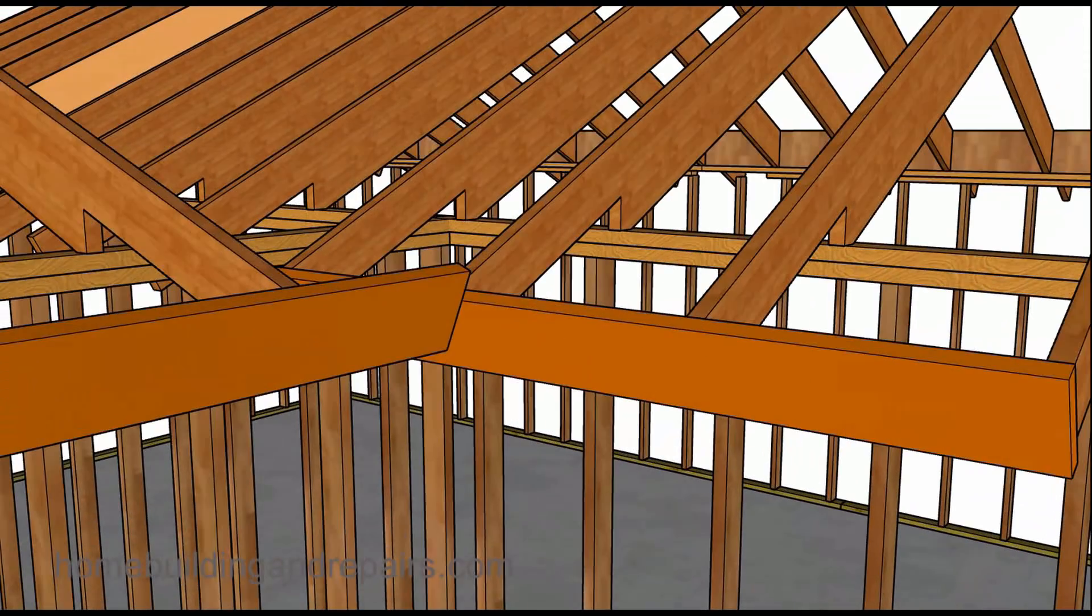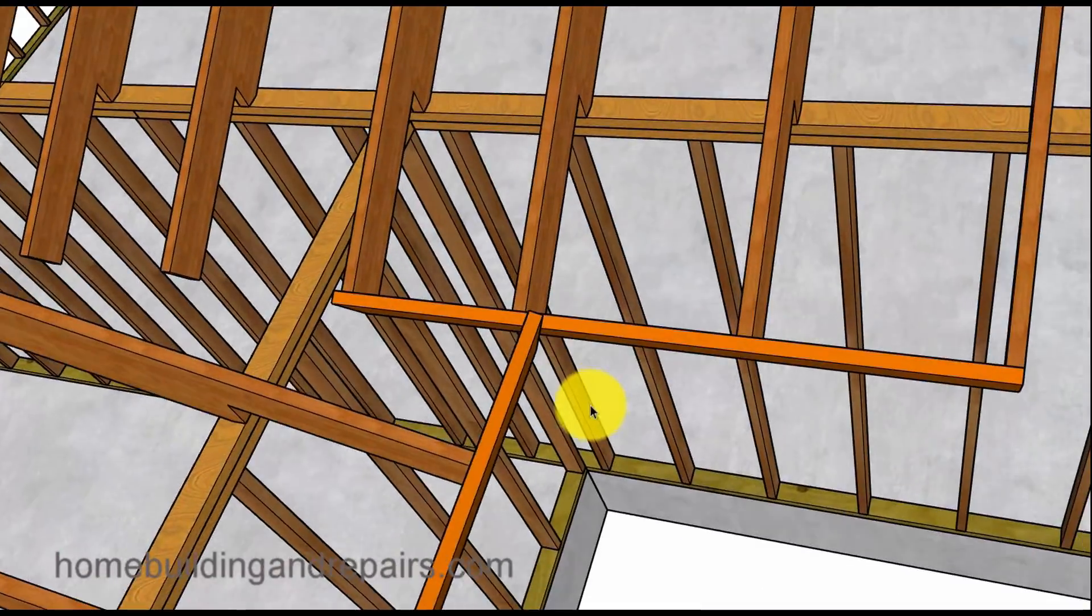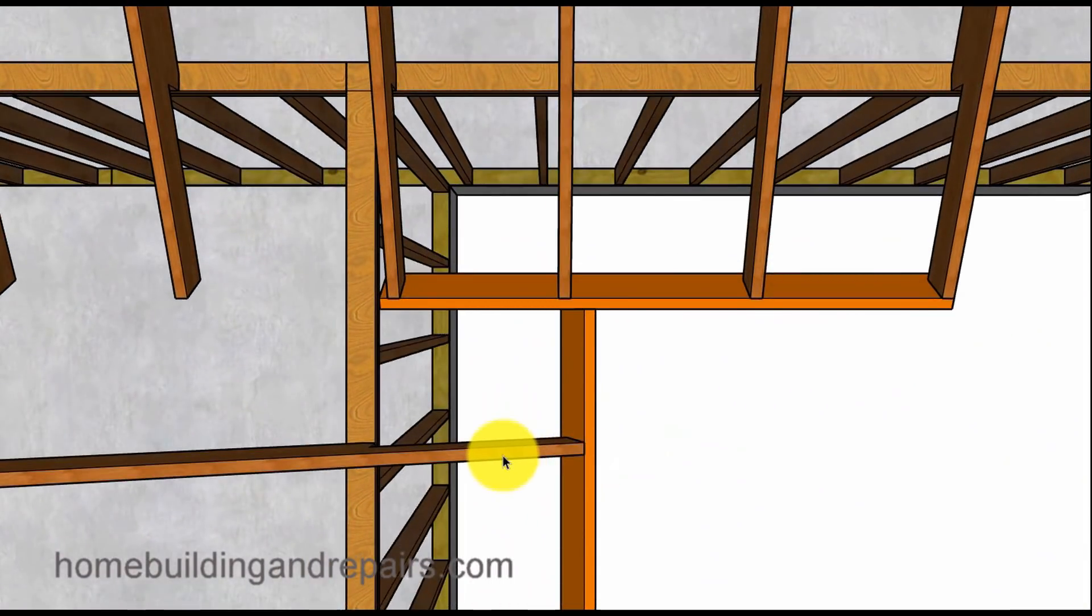Now one more thing I'd like to point out is that the fascia board if you change the pitches. Let's just say that you have a five and twelve pitch here and a four and twelve pitch over here. It's going to affect the fascia board. So you will need to move one of the sides in or move one of the other sides out in order to make it work to where the fascia board blends in together.